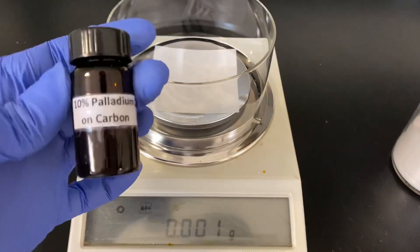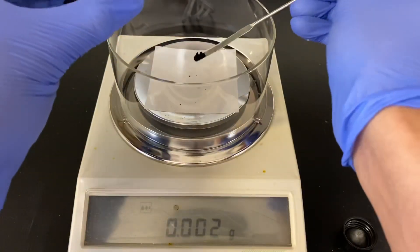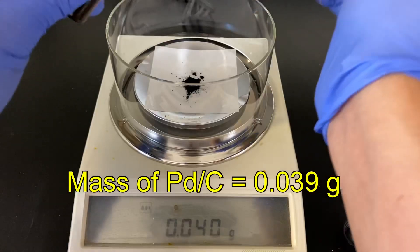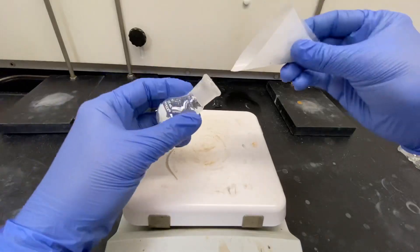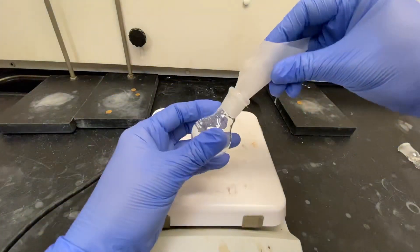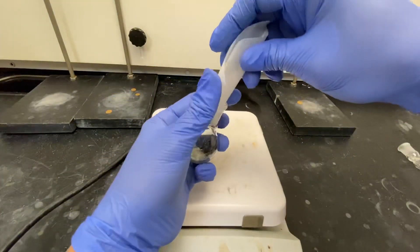The mass of the palladium on carbon used was 0.039 grams. Transfer the catalyst into the mixture and swirl to coat the reactants with the catalyst.